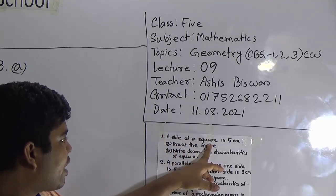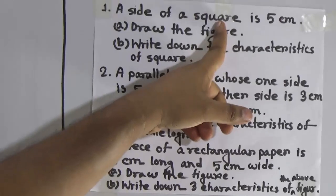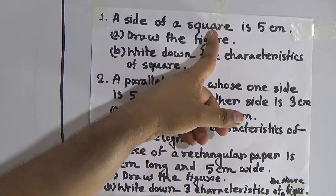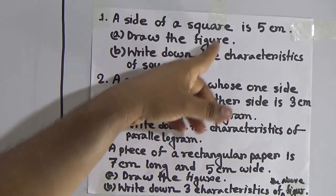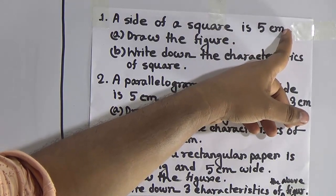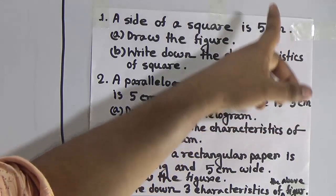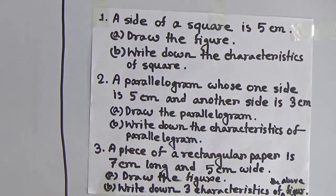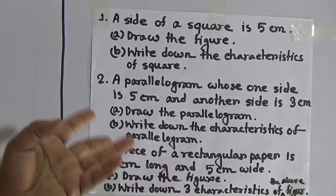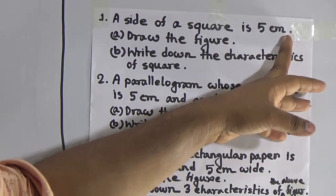A side of a square is 5 centimeter. That means, my dear students, a square — we know that all sides are equal and all angles are right angles. A side of that square is 5 centimeter, so the length of the side is given. By using this 5 centimeter, we need to find out and draw the figure. So part A of question number 1 is: draw the figure using 5 centimeter as its side length.